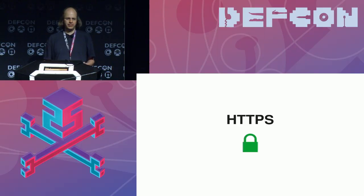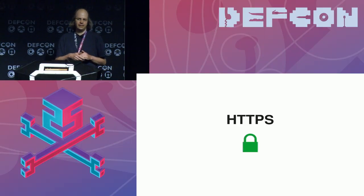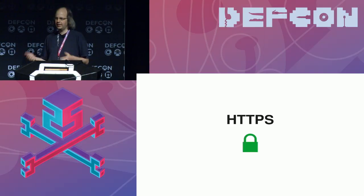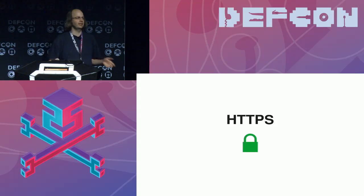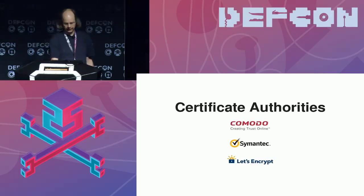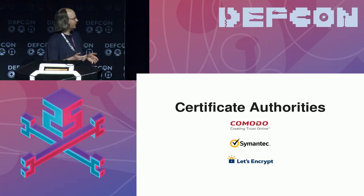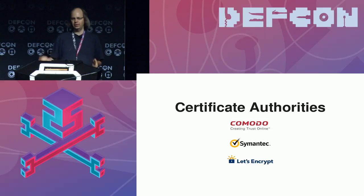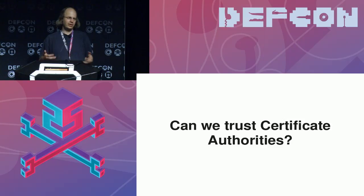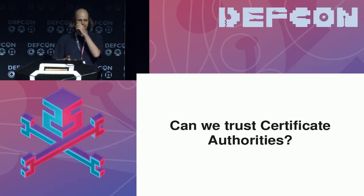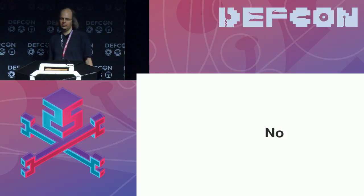HTTPS is a very important piece of modern web security, and a part of that is certificate authorities. If you want to run a webpage with HTTPS, you need a certificate signed by one of these certificate authorities — some of the bigger ones are Comodo, Symantec, and Let's Encrypt. One question that comes up often is how much we can trust these certificate authorities, and for many people the answer is: we cannot trust them, because there have been incidents where CAs have issued certificates for domains without authorization or even for malicious purposes.